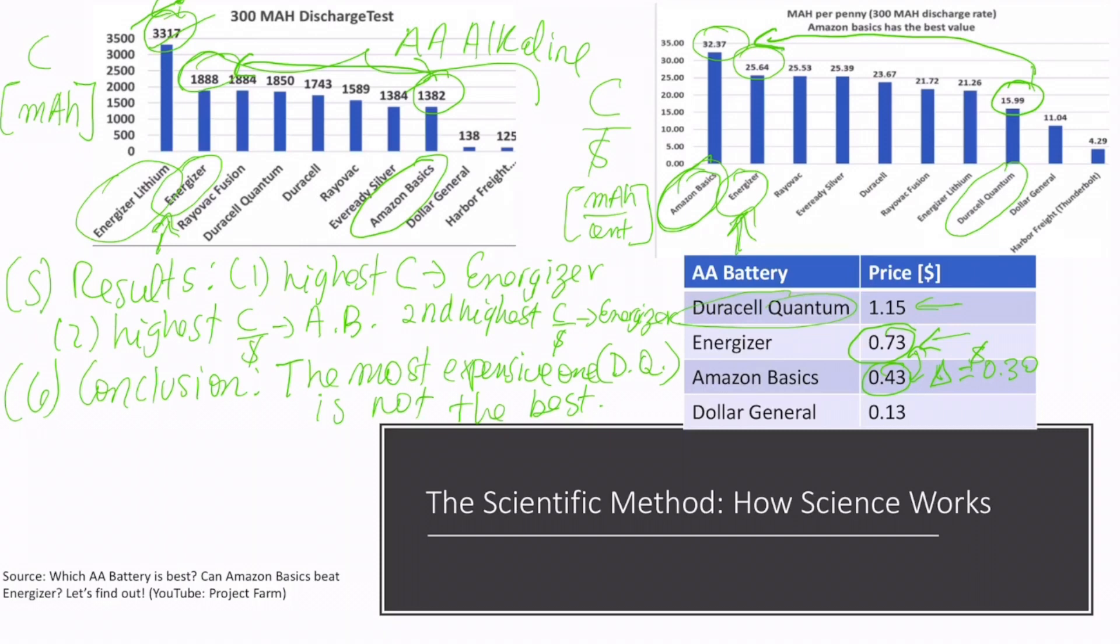I would prefer a battery that I don't have to change too often and it's a reasonable price. So I would say that the Energizer is the best AA battery because it has a high capacity and a high capacity per unit price. This would end the scientific method analysis.